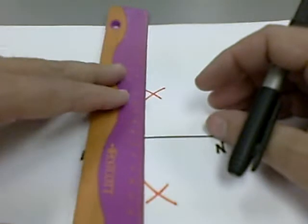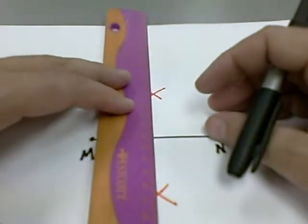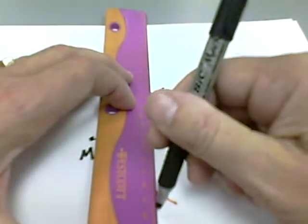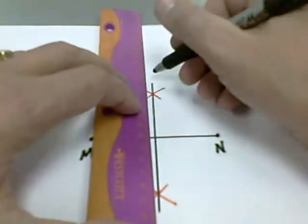Then, using my straightedge, I will draw a line between the two intersection points, and we can verify that it does bisect the line.